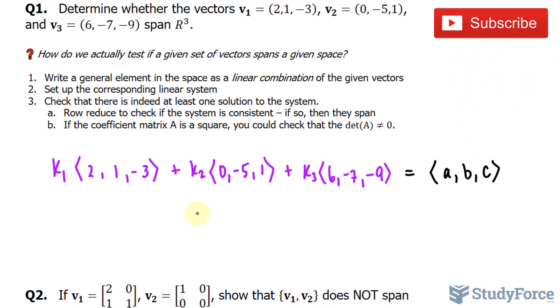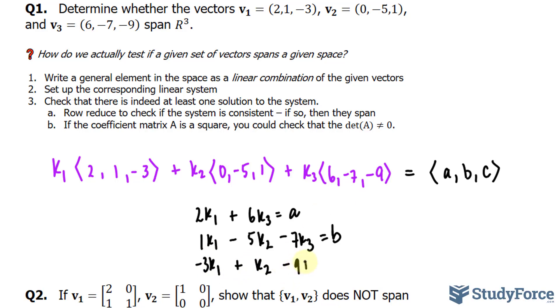So our first equation will be 2k sub 1. These two multiplied give you 0, so I'll skip that. Plus 6k sub 3, and that's equal to a. Let's do the same thing now for the second component. So we have 1k sub 1 minus 5k sub 2 minus 7k sub 3, that's equal to b. And our last equation, negative 3k sub 1 plus k sub 2 minus 9k sub 3 is equal to c.